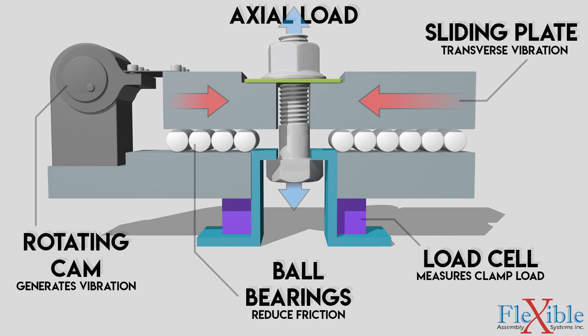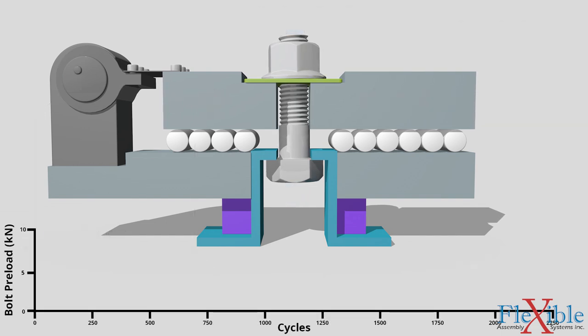When the rotating cam turns on, it begins to vibrate the top sliding plate perpendicular to the axial load. As the fastener begins to loosen, the clamp load is actively measured by the load cells which provide valuable data for analysis of the bolted assembly.